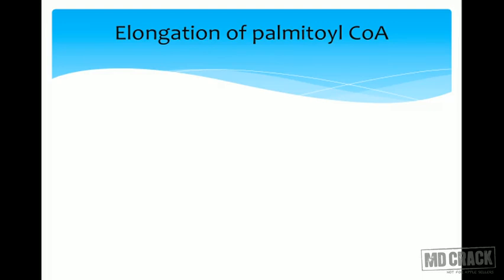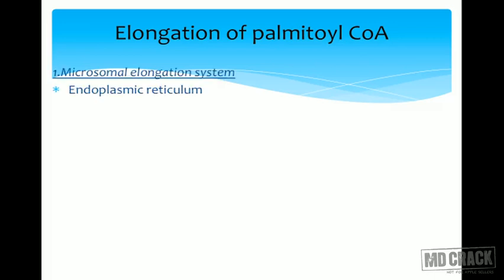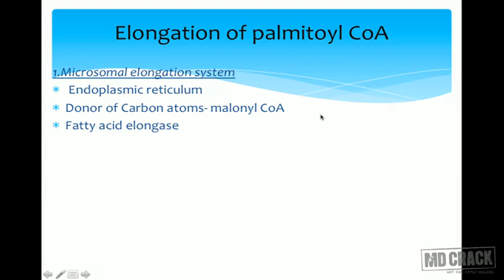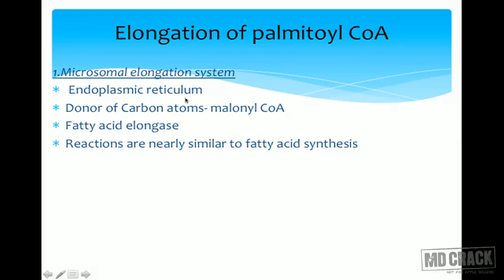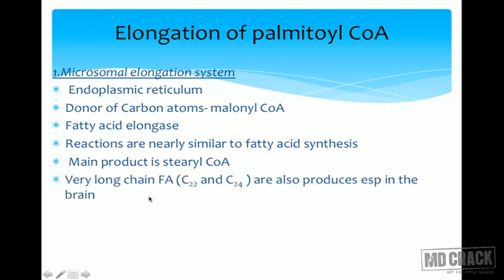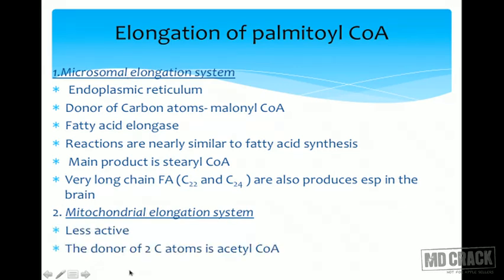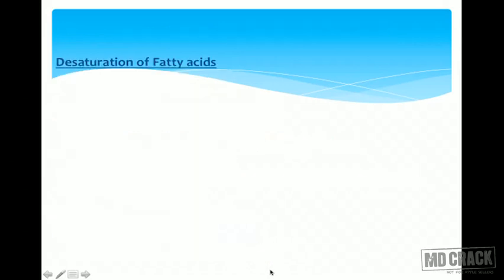Palmitic acid can undergo elongation. The microsomal elongation system occurs in the endoplasmic reticulum — the donor of carbon atoms is malonyl-CoA — and is also called fatty acid elongase. Reactions are similar to fatty acid synthesis. The main product is stearoyl-CoA; very long chain fatty acids C22 and C24 are also produced, especially in the brain. There is also a mitochondrial elongation system that is less active, where the donor is acetyl-CoA.